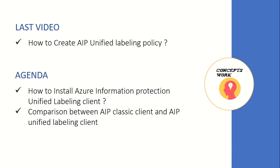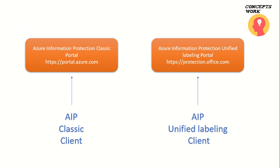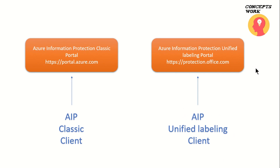Before I show you the installation process, there is one very basic fundamental you must know: the AIP classic client will always query labels and policies from portal.azure.com, whereas the AIP Unified Labeling client will always query policies and labels from protection.office.com. That's the basic difference you must know.